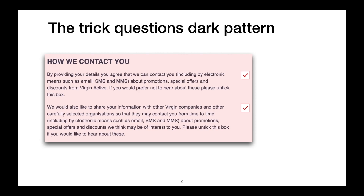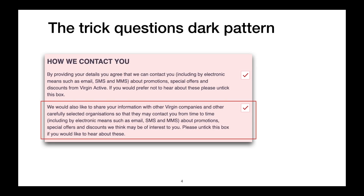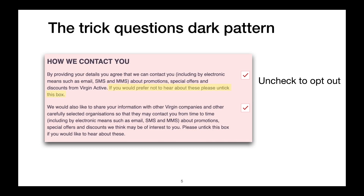So what is a dark pattern? Here is one example called trick questions. This interface is asking you for your consent to send you marketing material and to share your data with third parties. Say you wanted to opt out of both practices — you'd be inclined to uncheck both checkboxes. If you were to uncheck the first box, you would indeed opt out, but pay close attention to the second. If you were to uncheck it, you would actually be opting in.